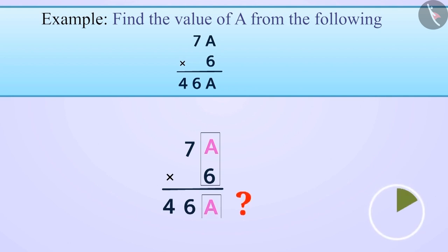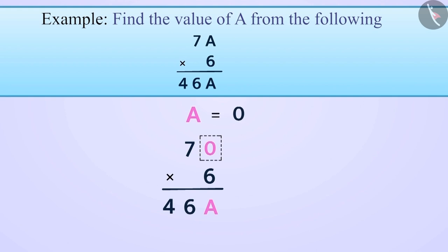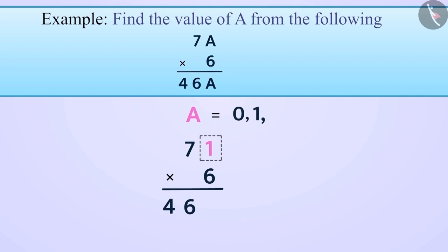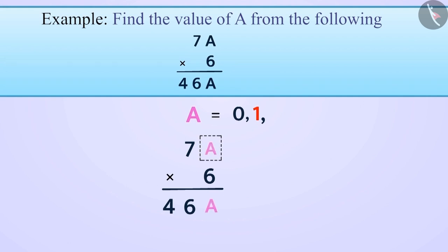Think for a while. If we take the value of A as 0, then 0 times 6 equals 0 — we get 0 in the units place, so A can be 0. If we take A as 1, then 1 times 6 equals 6 — we do not get 1 in the units place, so A cannot be 1. Similarly, substituting A as 2 through 9, we find that A can be 0, 2, 4, 6, or 8, but cannot be 3, 5, 7, or 9.